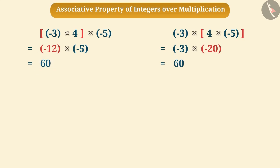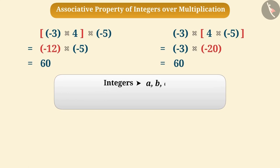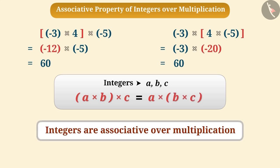That means we can group integers in any order to multiply them. In general, for any three integers a, b, c: (a × b) × c = a × (b × c). Therefore, integers are associative over multiplication.